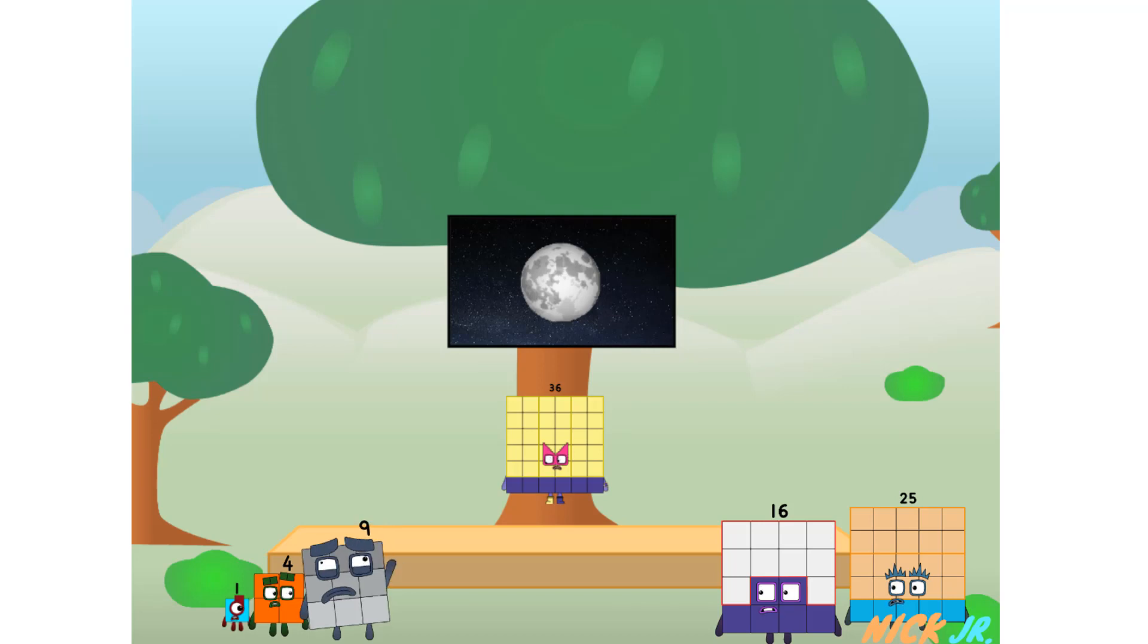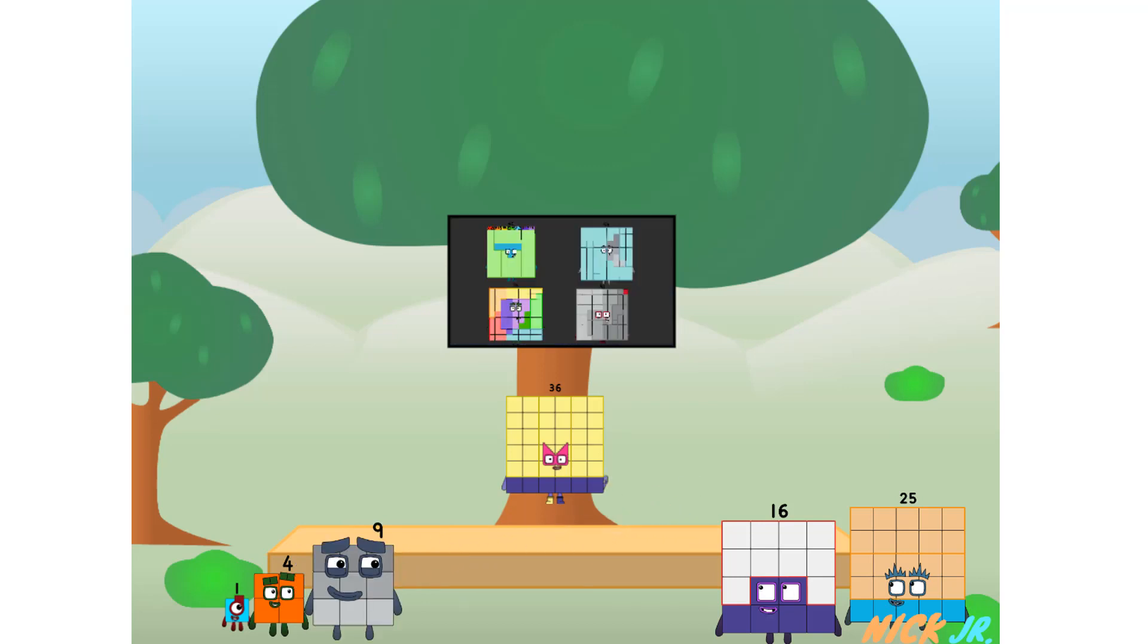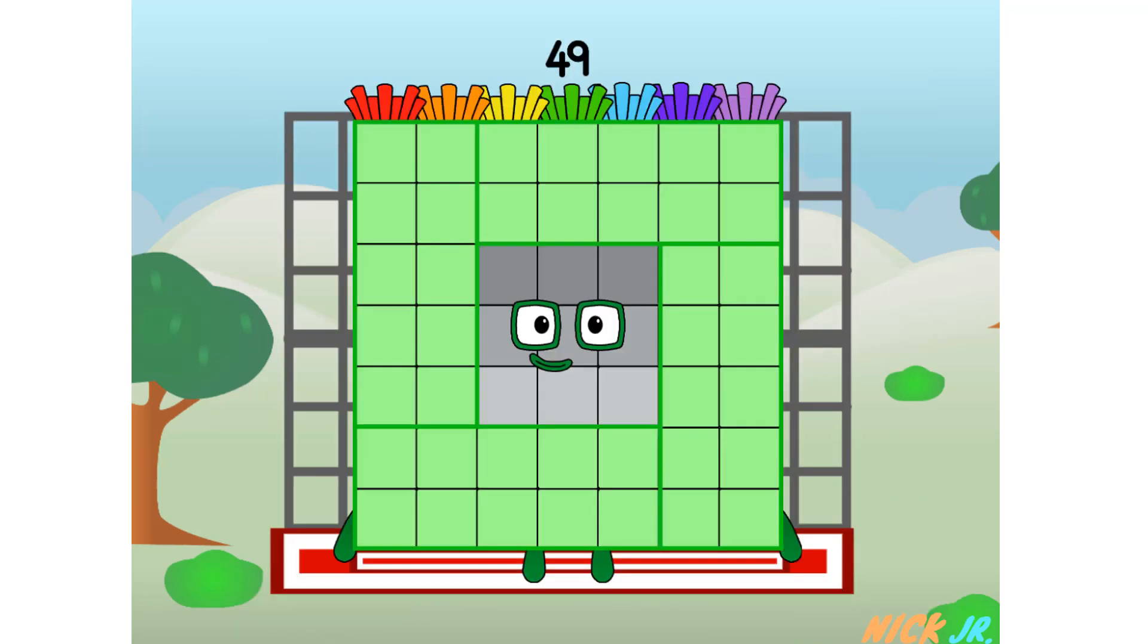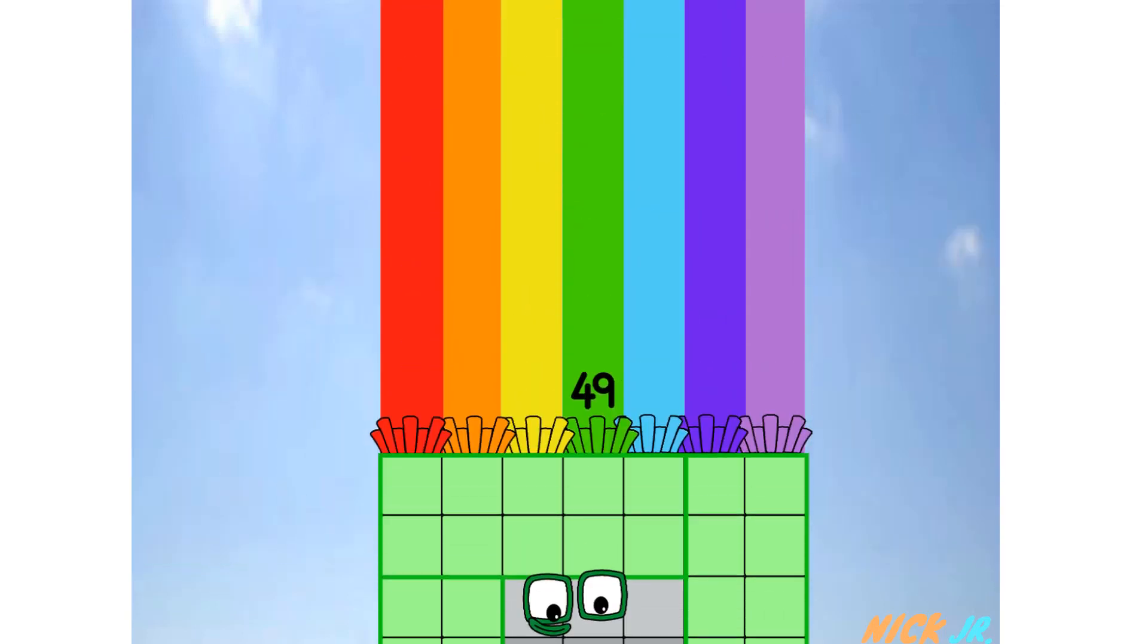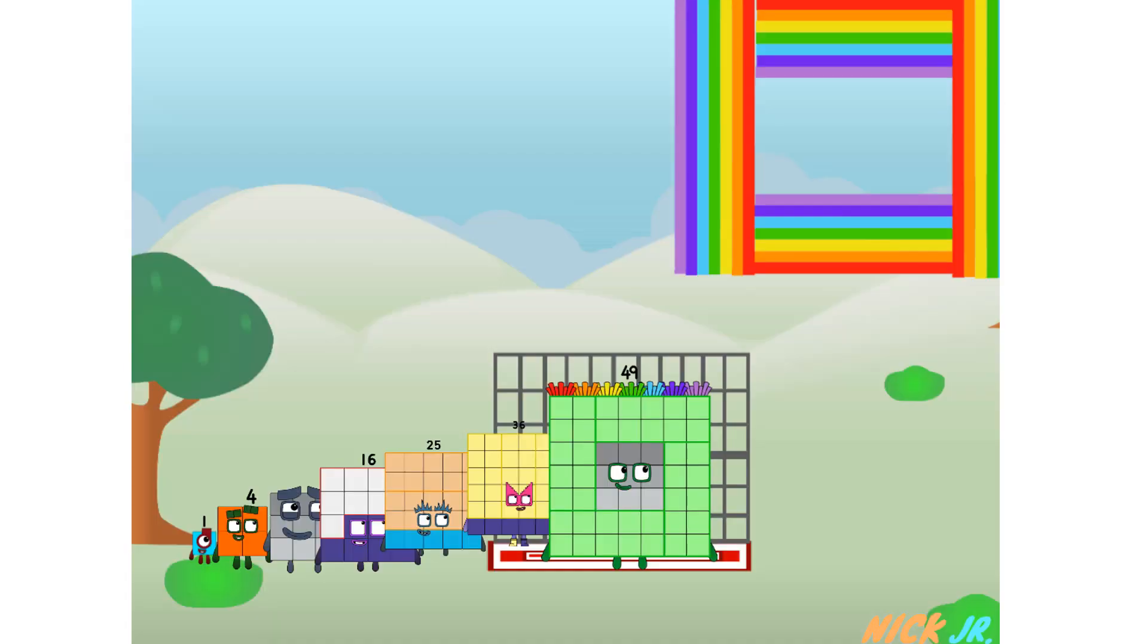But how will we get all the way up there? We call in some friends. Some big square friends. 49 commencing rainbow test flight. All systems checking out. Seven by seven. Wish me luck. Heavy is flying. You didn't get that high, but I did just invent the square rainbow.